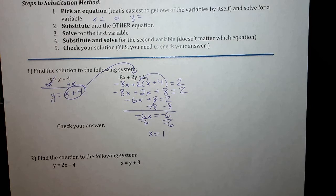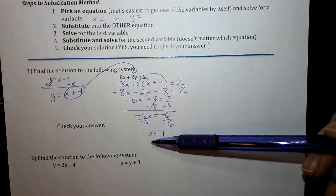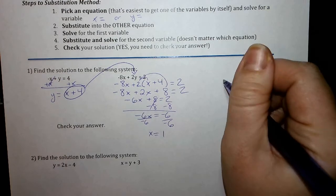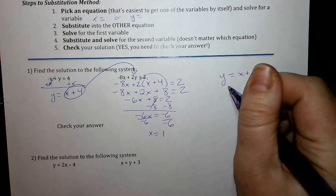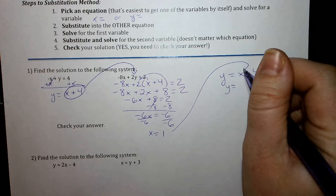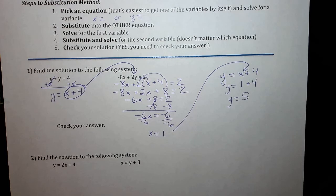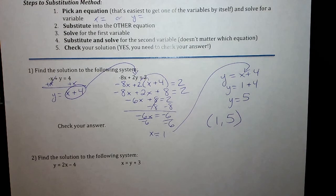Now step 4, substitute and solve for the second variable. It doesn't actually matter which one you plug that into. But since we used the second equation to get the first variable, I always say use the other one to get the other variable in case you made a mistake somewhere. So this equation was y equals x plus 4. And so I have 1 here that I'm going to substitute in for x. So 1 plus 4 equals 5. So my solution, just like when we did graphing, it's going to be an ordered pair. My solution is going to be 1 comma 5.